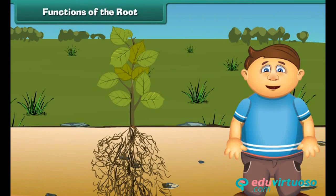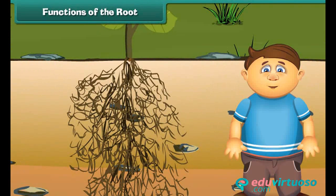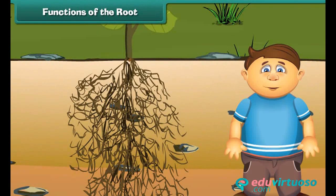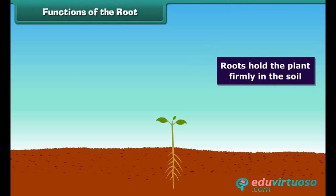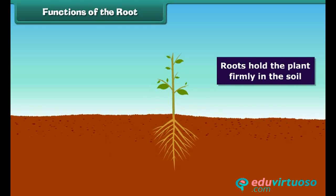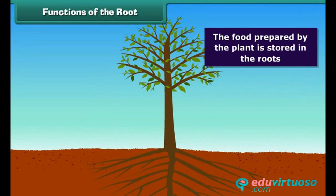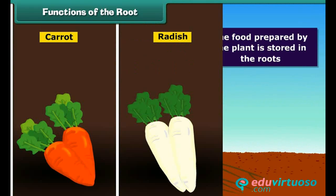We have learnt the structure and types of roots. Now, what are the functions of roots? Roots hold the plant firmly in the soil. They also absorb water and nutrients from the soil and send them to other parts of the plant. Roots also store food in some plants such as carrot, radish and turnip, and we eat these roots to get nutrition.